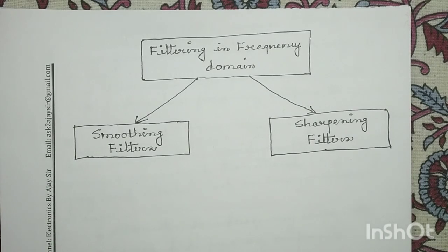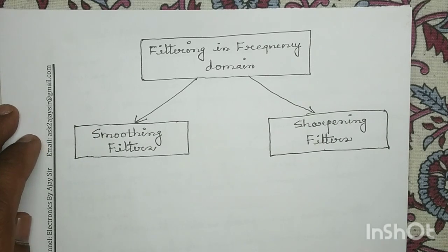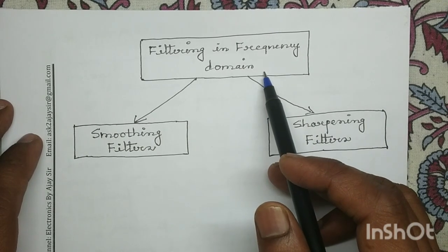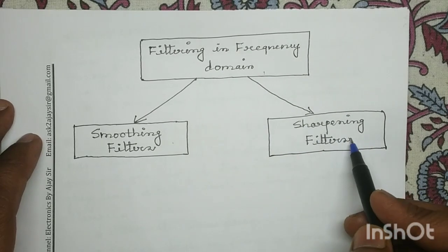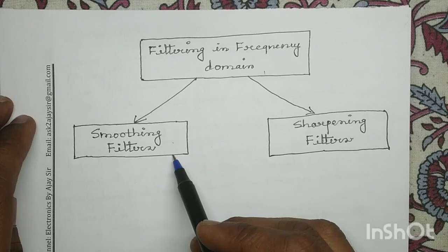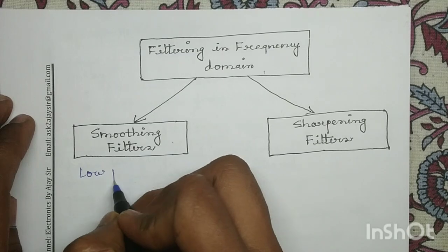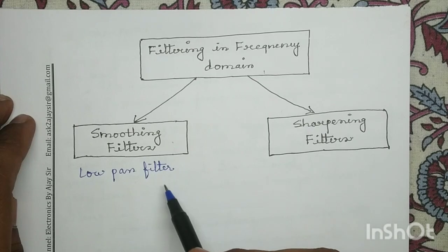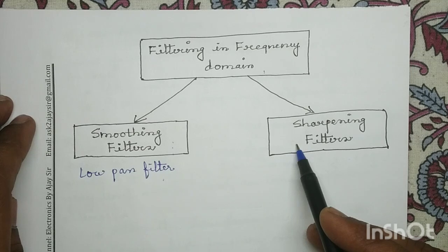Good morning. In this video lecture we will learn different types of filters in the topic of filtering in the frequency domain. We mainly perform filtering in the frequency domain for two major objectives: one is the smoothing operation, and another is the sharpening operation. The filters used for smoothing are called smoothing filters — for example, the low pass filter. For sharpening, we use the high pass filter.